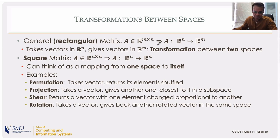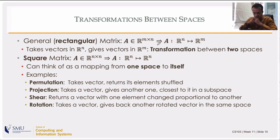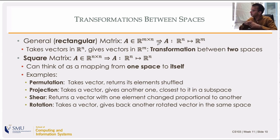Rotation is another example. It takes a vector and gives you another vector in the same space, but at a different angle, pointing in a different direction without changing the magnitude or norm of the vector. Any square matrix is a mapping from one space to itself — that mapping is called an automorphism.